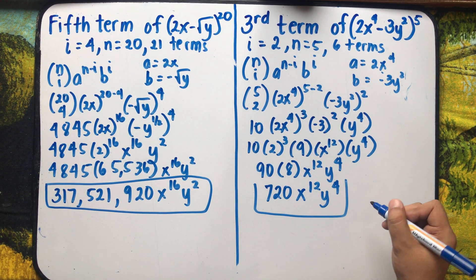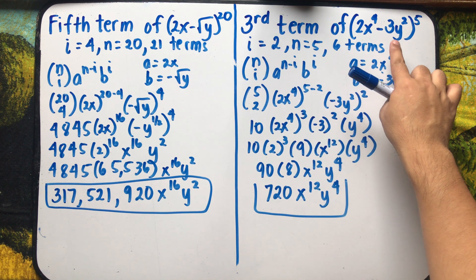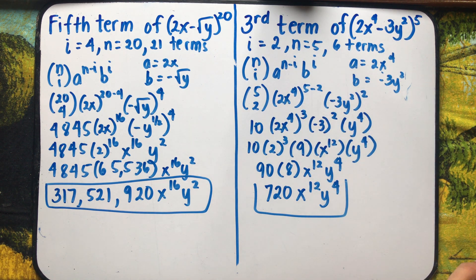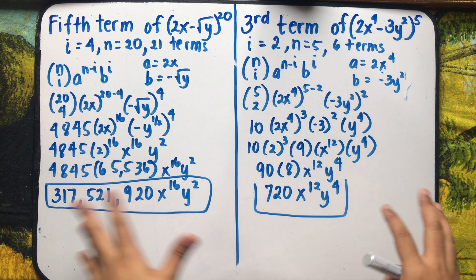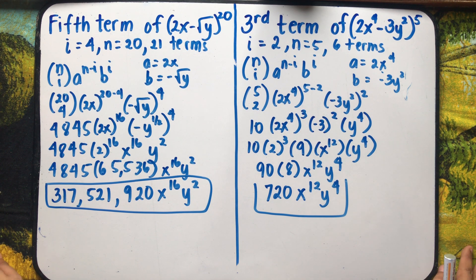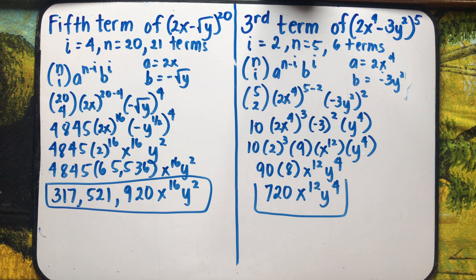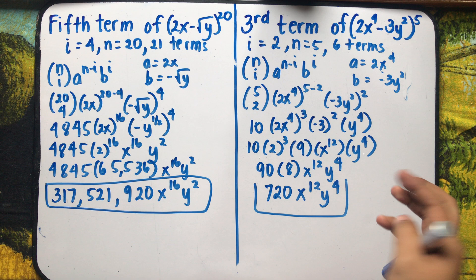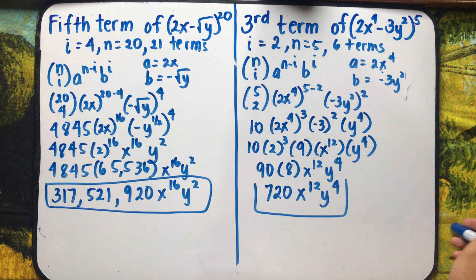That is how we solve for the third term of the expansion of (2x⁴ - 3y²)^5. If you have comments, suggestions, questions, and clarifications regarding binomial theorem and how to get a specific term in a binomial expansion, you may message me on Facebook, Twitter, or Instagram. I am Engineer Jod Edward Hernandez saying that mathematics is always fun. Goodbye and God bless.